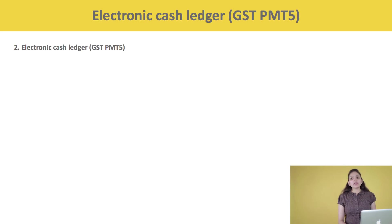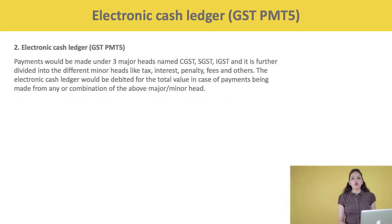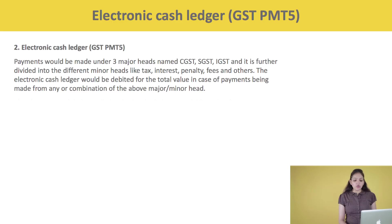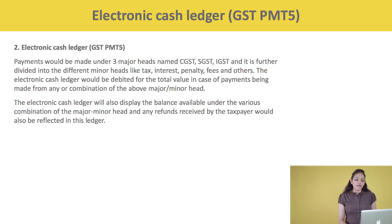The second type of ledger is the Electronic Cash Ledger, maintained in form GST PMT 5. Payments would be made under three major heads: CGST, SGST, and IGST, further divided into different minor heads like tax, interest, penalty, fee, and others. The Electronic Cash Ledger would be debited for the total value in case of payments being made from any or combination of the above major or minor heads. It will also display the balance available under various combinations of major-minor heads, and any refunds received by the taxpayer would also be reflected in this ledger.